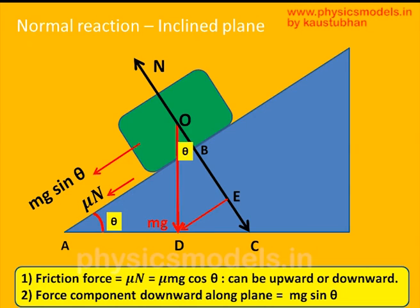The friction force is a function of the normal reaction N — it is not a function of the weight — so we have to be very careful about drawing the friction force. Here the friction force equals mu times N, shown as a red arrow pointing down, because the block is assumed to be moving upwards. But if the block is sliding down, then mu N will point upwards, opposite to the direction of motion. We have to take care to see which is the direction of motion.